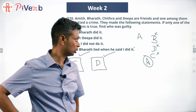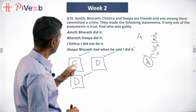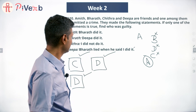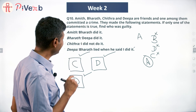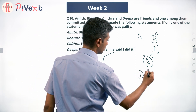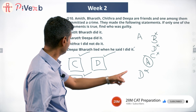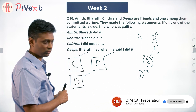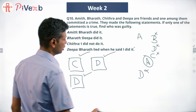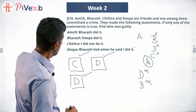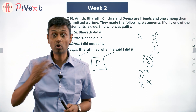We are left with the possibility that only D is true. Deepa says 'Bharat lied when he said I did it' — so Deepa did not commit the crime. Statement A should be false — Bharat did not commit the crime. Statement B should be false — Deepa did not commit the crime. Statement C — Chitra saying 'I did not do it' — should be false, meaning Chitra committed the crime.